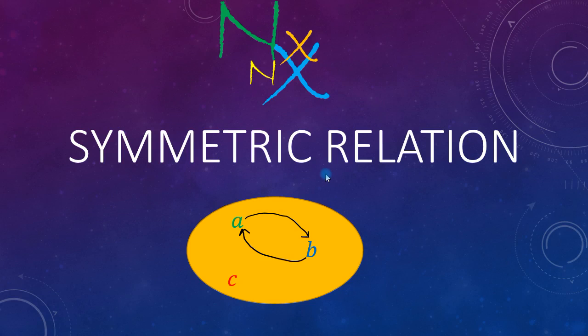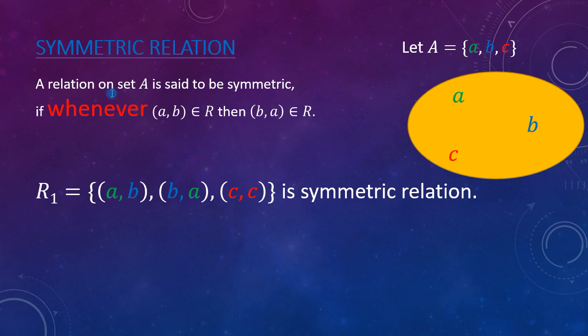Hi guys, welcome back again. In this lecture we will see what is symmetric relation. A relation on set A is said to be symmetric if whenever a is related to b, then b is related to a must be in the relation.